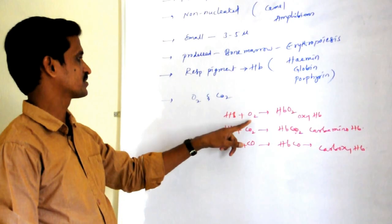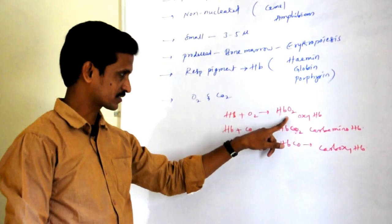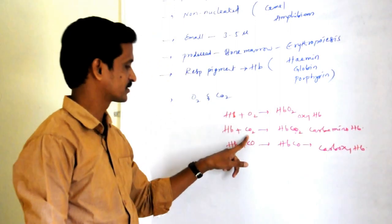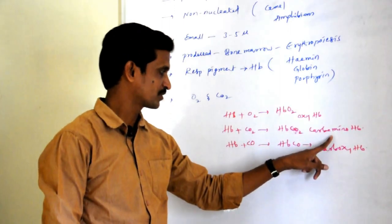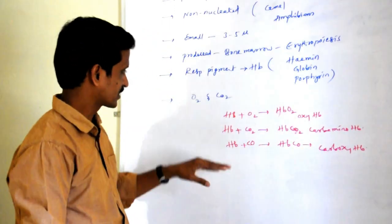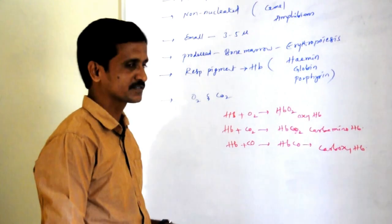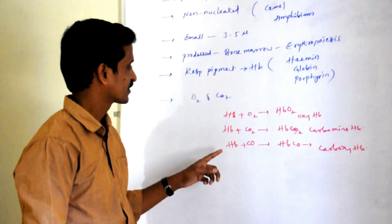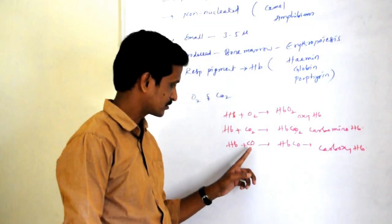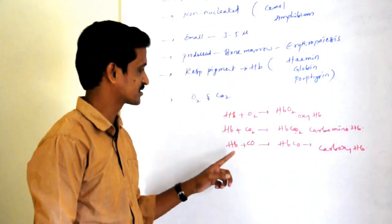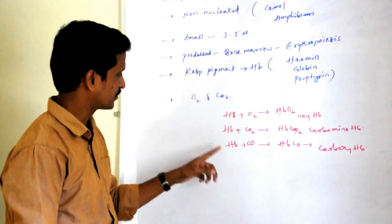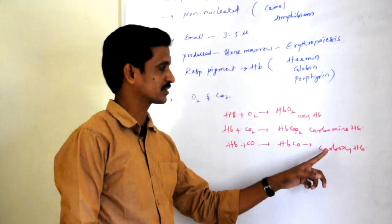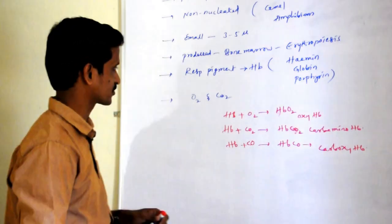In rare cases where ventilation is very less and oxygen supply is deficient, hemoglobin has a higher efficiency to combine with carbon monoxide, leading to carbon monoxide poisoning, which may even kill the individual.